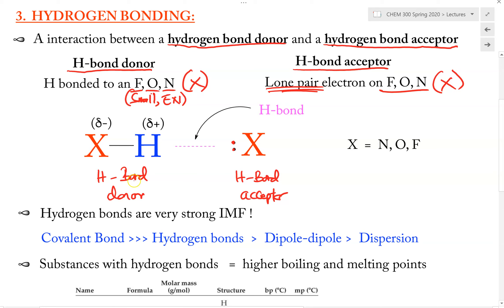So why do this donor and acceptor interact with each other? This interaction is quite strong. Let's analyze what makes it so special and strong. If we have a bond between X and Hydrogen, where X is a small and electronegative atom, then this bond would be a highly polar covalent bond, where the electron is shifted to the atom X. That makes X become partially negative, and this Hydrogen becomes partially positive.